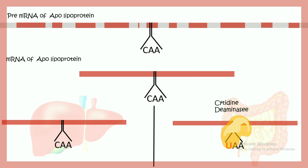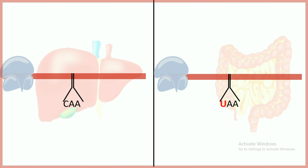In the intestine, cytidine deaminase activity is high and it converts cytosine into uracil — C to U. There was a codon marked as CAA and now it is marked as UAA, which is a stop codon. As a result, in the liver there would be translation of the whole RNA.